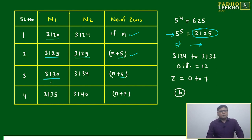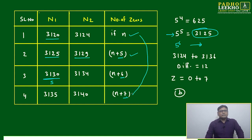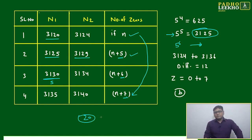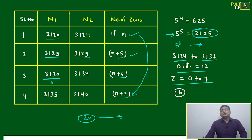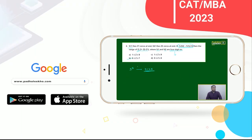From 3125 to 3130, zeros jump by 1 (just a multiple of 5, not of any higher power). From 3130 to 3135 and 3135 to 3140, each jumps by 1. So the maximum total jump can be 7. Taking the range from 3124 to 3136 — a difference of 12 — the number of zeros can jump by 7. Therefore, the range of z2 minus z1 is 0 to 7.